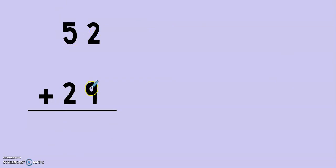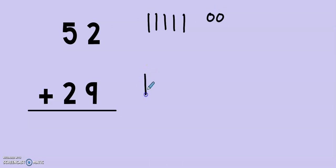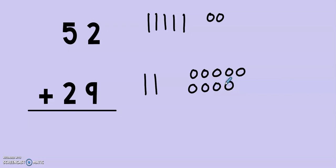52 plus 29. Just like last time, we start by drawing both of the numbers. 10, 20, 30, 40, 50, 51, 52. 10, 20, 21, 22, 23, 24, 25, 26, 27, 28, 29. Now, our next step stays the same. We start by counting up the ones: 1, 2, 3, 4, 5, 6, 7, 8, 9, 10, 11. I have 11 ones.